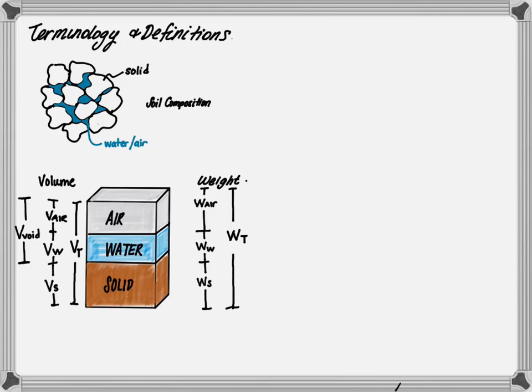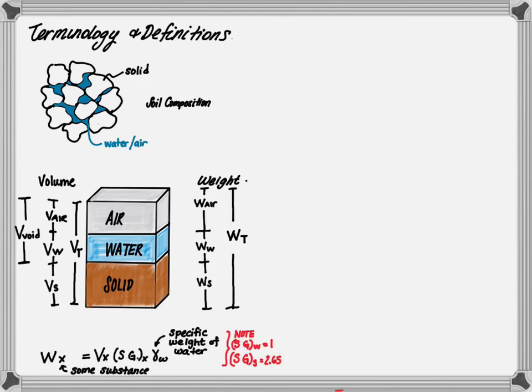The total volume is the sum of the volume of voids and the volume of solids. With this information, we can relate volume and weight. The weight of a substance is equal to the volume of that substance times the specific gravity of the substance times the specific weight of water. Note that the specific gravity of water is 1, and the specific gravity of solid — usually soil in our case — will be 2.65. The void ratio E is the volume of voids divided by the volume of solids. You can also express it as: the volume of voids equals E times the volume of solids.